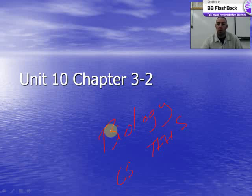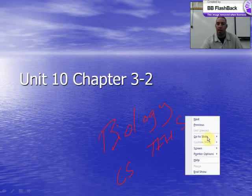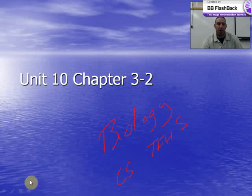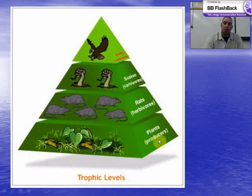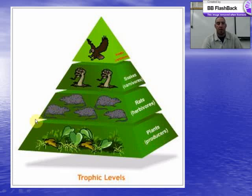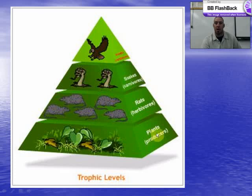Good morning. We are looking at chapter 3-2, unit 10. This is going to be about energy flow in an ecosystem. First, here is a graphic: at the bottom is the base of the pyramid, which provides all the energy for the organisms above. We give them the name 'producers.'